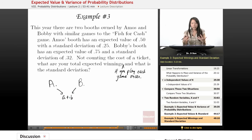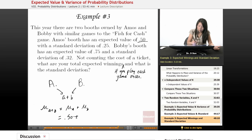And we want to know, what is the expected value of A plus B? So we know that μ of A plus B is equal to the μ of A plus the μ of B, right? And we have μ of A and B, so expected value of Amos's booth is 50, 50%, right? And the expected value of Bobby's booth is 0.75. So we add that together. The new μ is $1.25.